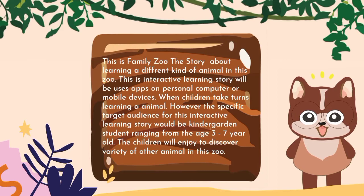This is Family Zoo — a story about learning different kinds of animals in the zoo. This interactive learning story will be used as an app on a personal computer or mobile device. The specific target audience for this interactive learning story will be kindergarten students ranging from age 3 until 7 years old. The children will enjoy discovering a variety of animals in this zoo.